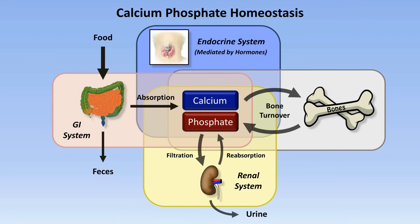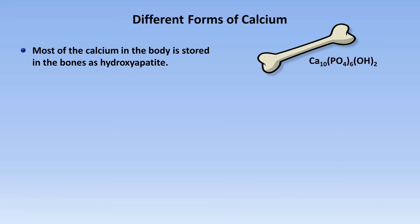Pictured here in the dark pink are the four parathyroid glands in the neck, which play a critical role in this. For patients in net zero calcium phosphate balance, the amount of calcium and phosphate taken into the GI tract via food must be equal to the sum of that lost in feces and that excreted in urine. Within the body, there are different forms of calcium. At any given time, the vast majority of calcium is stored in the bones as a mineral called hydroxyapatite, which has the chemical formula to the right.